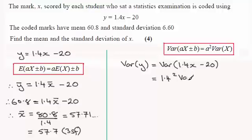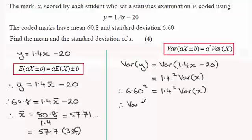Now according to the result up here, then this is going to be equal to 1.4 squared times the variance of X. And we know that the standard deviation of Y was 6.60, so therefore we've got 6.60 squared for the variance of Y equals 1.4 squared times the variance of X. And if we rearrange this for the variance of X, it's going to be equal to 6.60 squared divided by 1.4 squared.